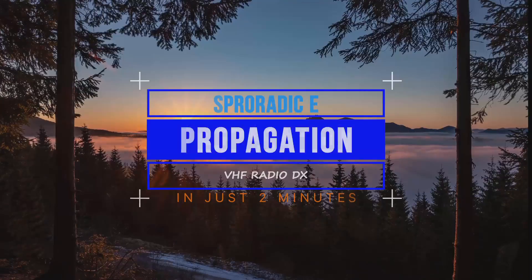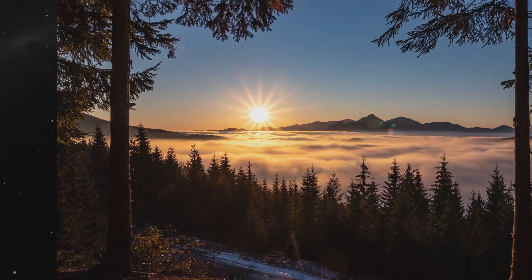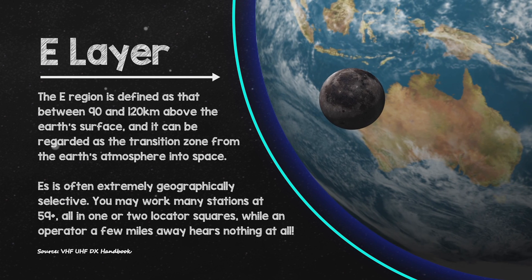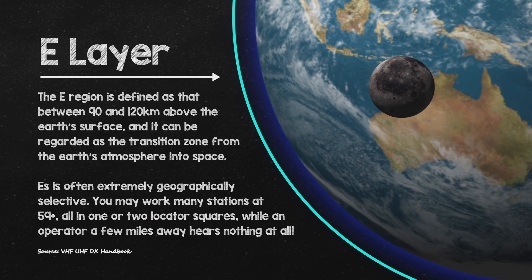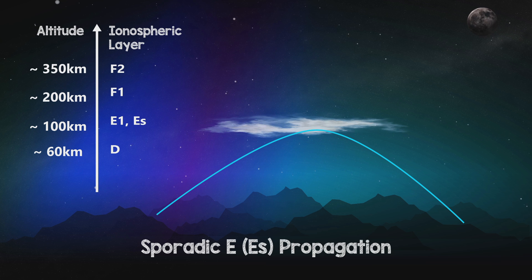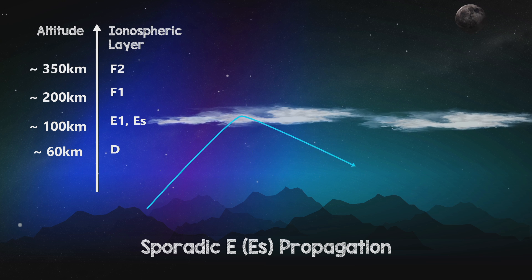Sporadic E is a type of radio propagation that occurs in the E layer of the ionosphere. The E layer extends from about 90 to 120 kilometres above the Earth's surface. Sporadic E propagation is characterised by sudden, short-lived bursts of enhanced ionisation, resulting in increased reflectivity of radio waves.